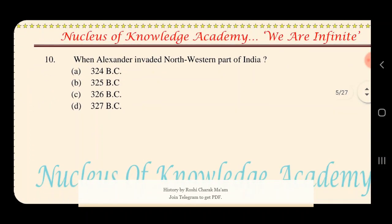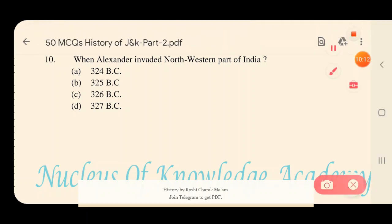Question 10: When did Alexander invade the north-western part of India? Options: A) 324 BC, B) 325 BC, C) 326 BC, D) 327 BC. The answer is B — 325 BC. Alexander invaded the north-western part of India in 325 BC.